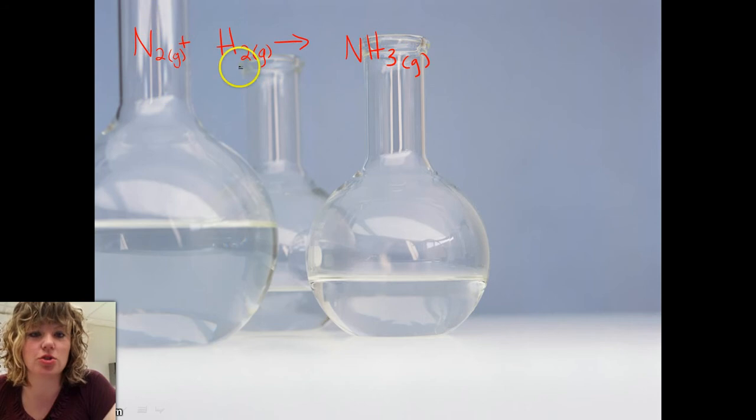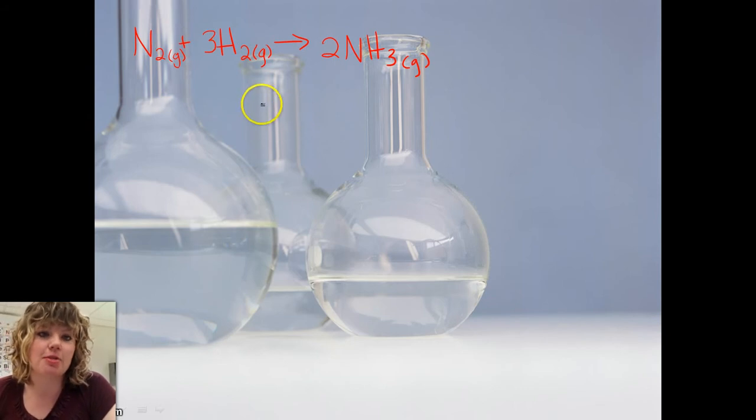So we have three hydrogen over here, and we have two here, so this is an odd number, so I'm going to put a two here. That gives me six hydrogens. If I put a three here, I have six hydrogens, two nitrogens, two nitrogens, and I am ready to go.